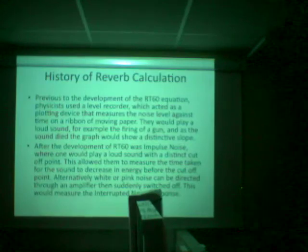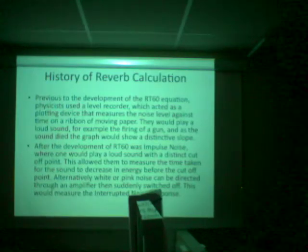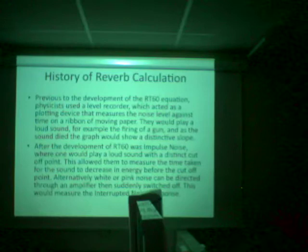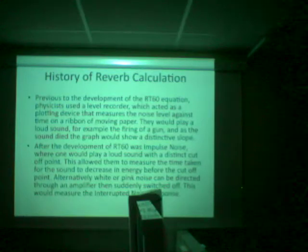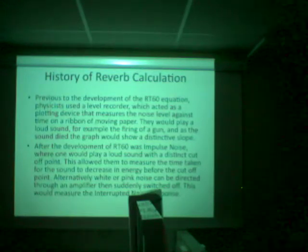Previous to the development of the RT60 equation, physicists used the level recorder, which acts as a plotting device that measures the noise level against time. They would play a loud sound — for example, the firing of a gun — and as the sound died, the graph would show a distinctive slope.